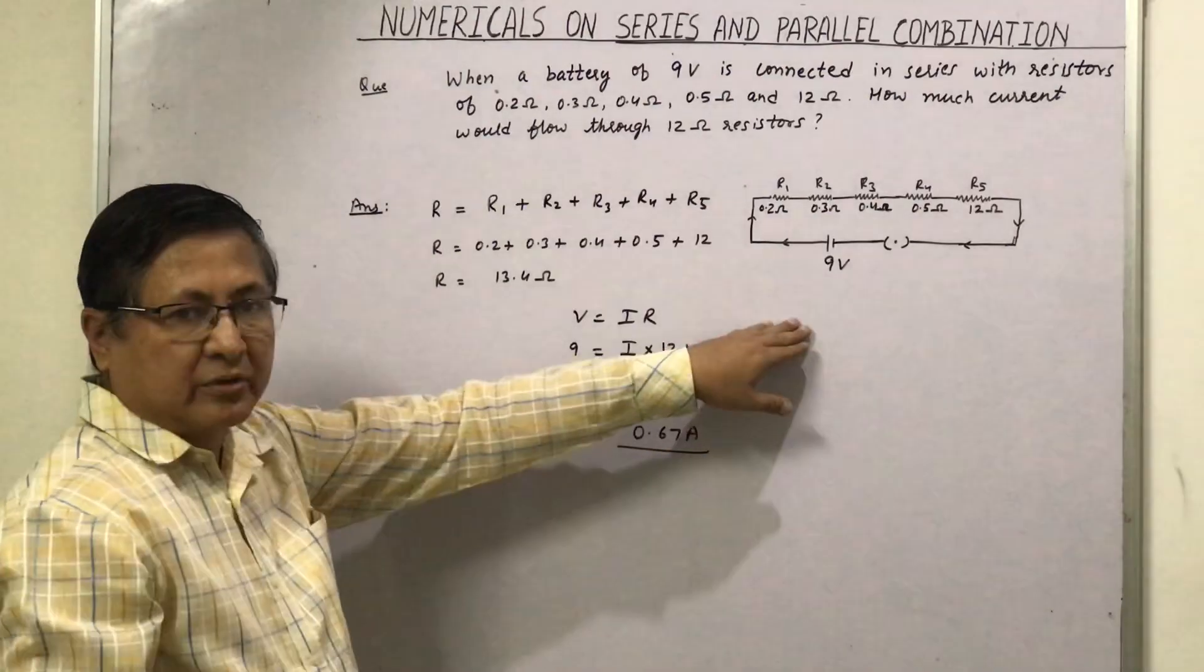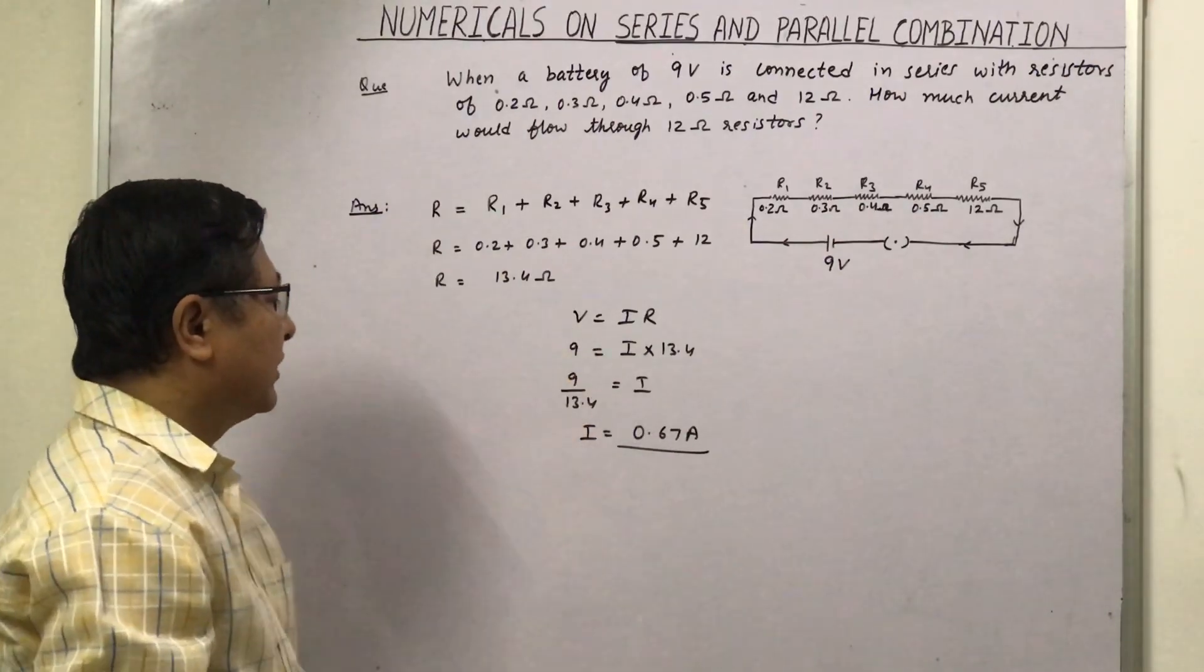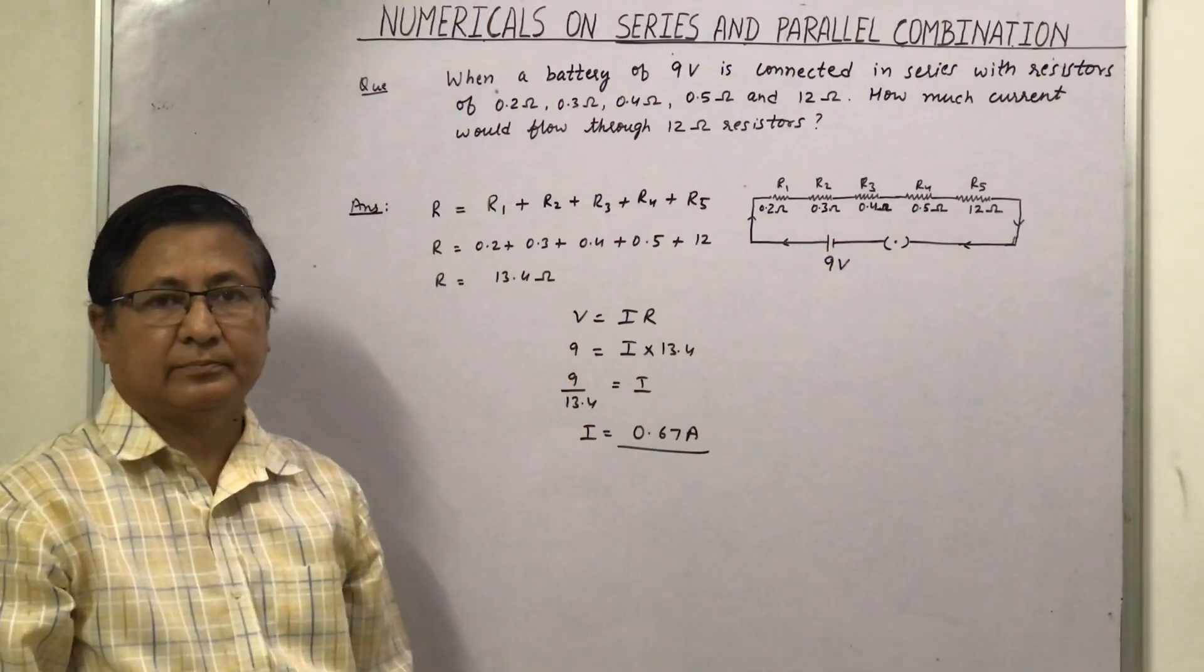So don't do that mistake. V is equal to IR, so we calculate the current and that is equal to 0.67 ampere. Thank you. Thanks for listening.